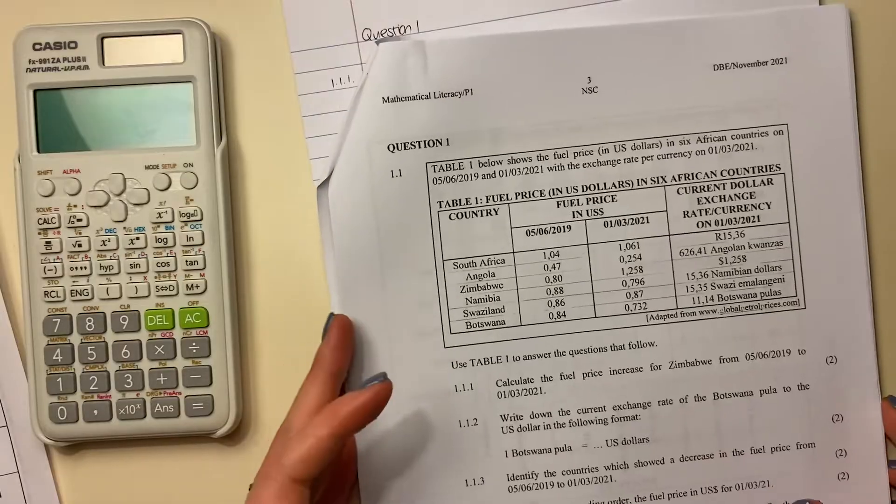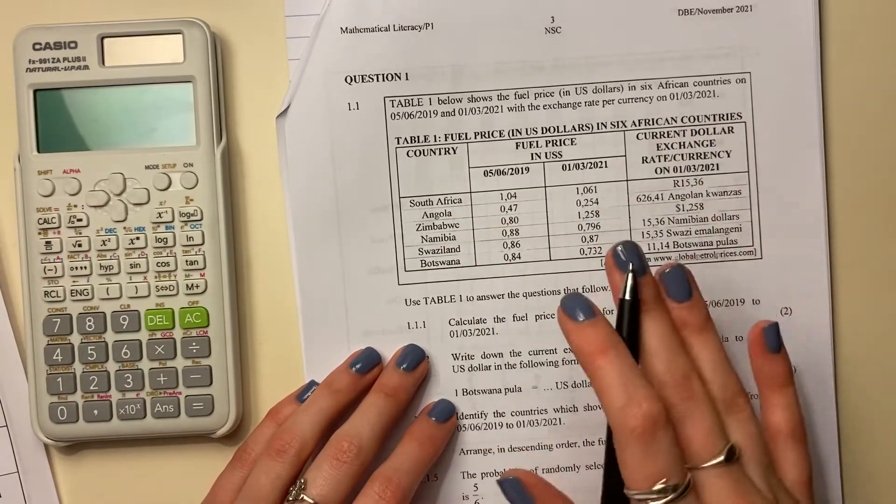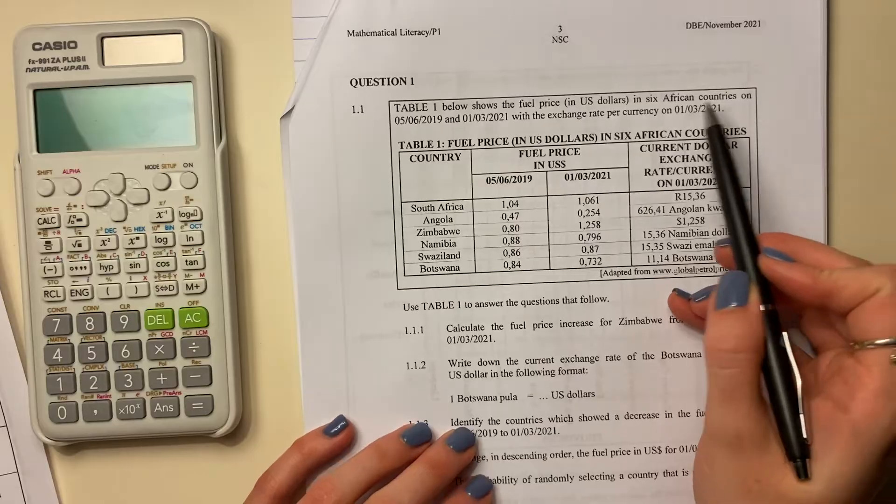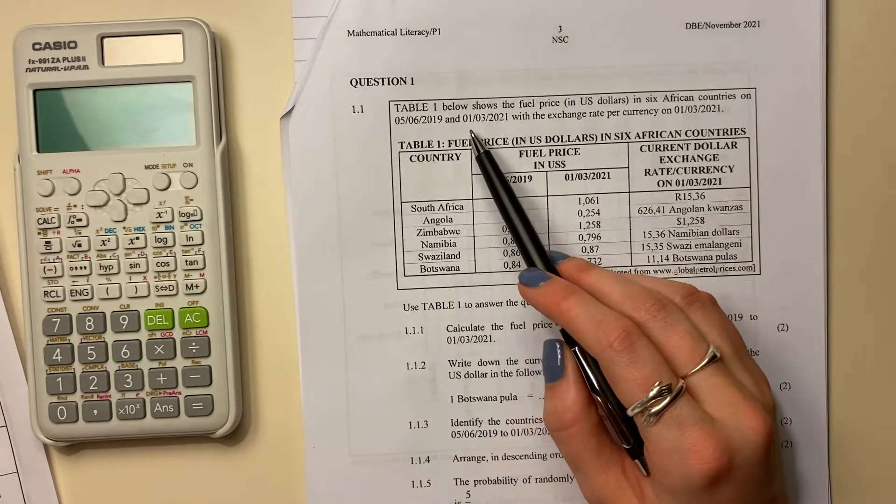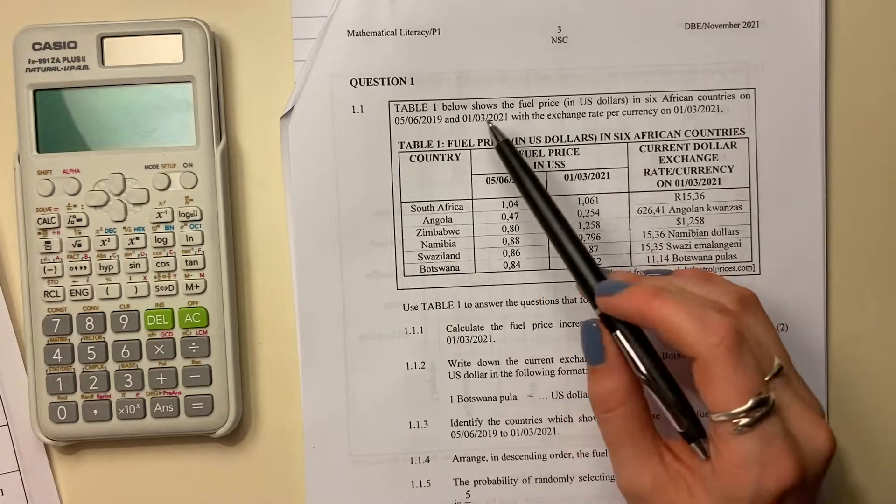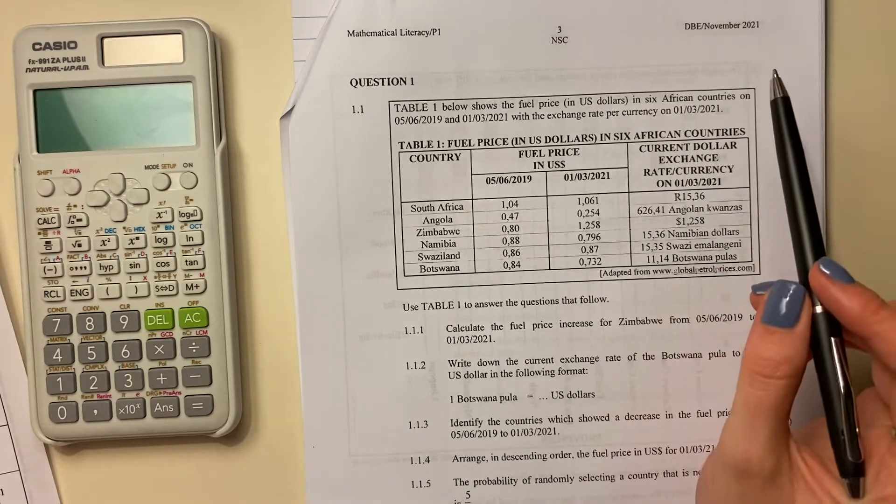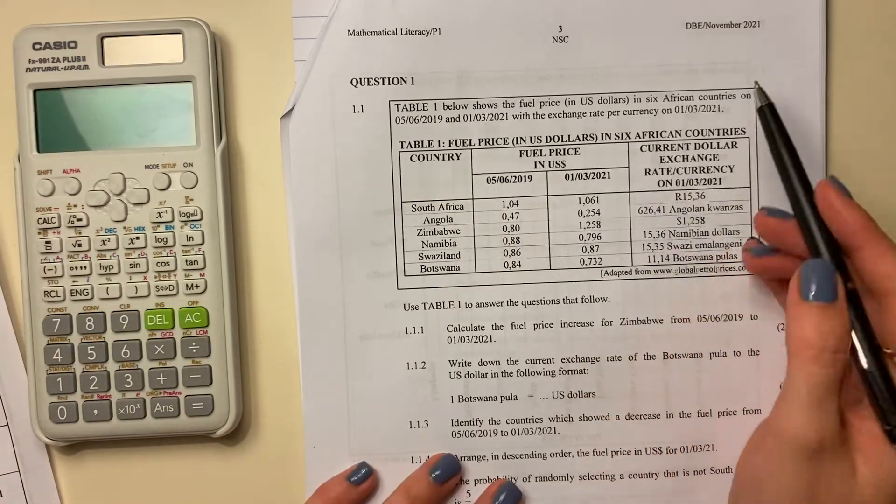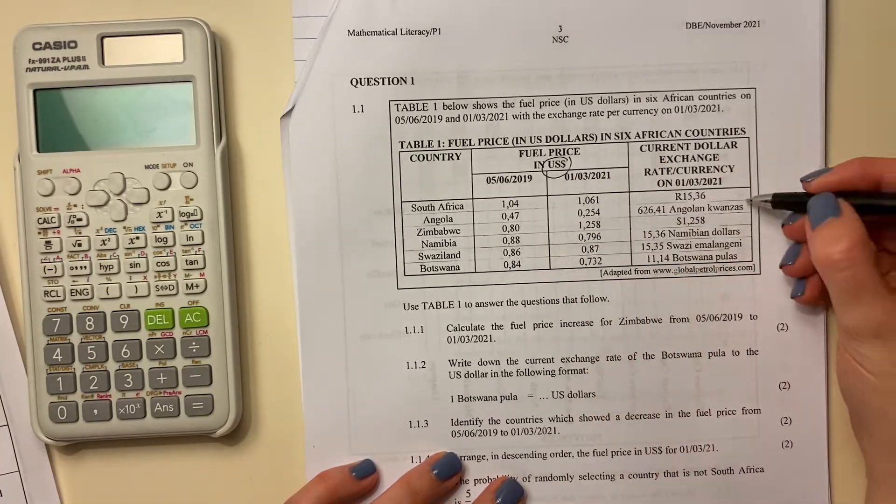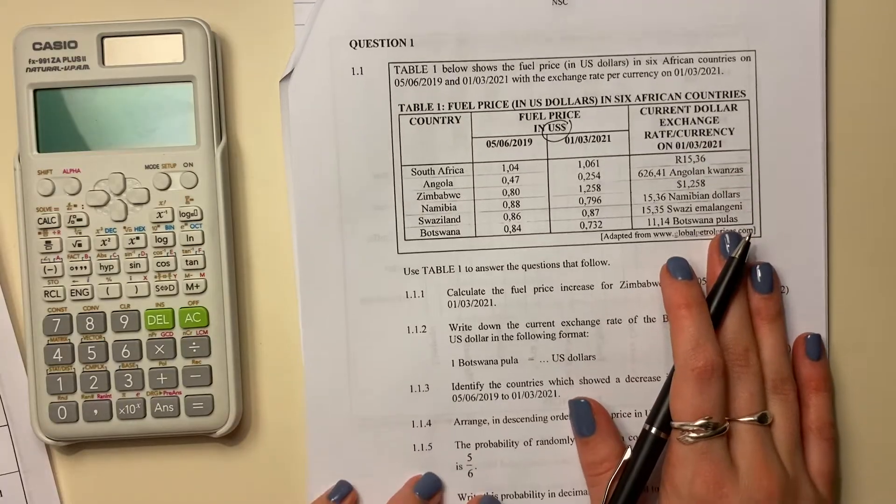Alright, let's look at question one. So question one in these papers is generally quite finance oriented and it generally starts off quite slow, not too bad, slow burn, and then it kind of ramps up. So let's read. Table one below shows the fuel price in US dollars in six African countries on 05-06-2019 and 01-03-2021. So that is the 5th of June and that is the 1st of March in those respective years with the exchange rates per currency on the 1st of March in 2021. So there they are. There's the various prices. This is in US dollars. Be careful. And then it gives the exchange rates here. So we're probably going to have to do a bit of exchange rate work. We're familiar with that for the most part. Don't stress. I'll take you through it. But let's look at this question.